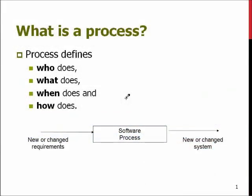Software process is a simple checklist and model which tells who does, what does, when does and how it does. The idea is that it's a roadmap or steps needed to go from changed or new requirements or an observed need for software, through the software process, to have a new product.